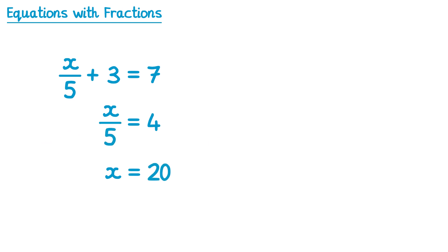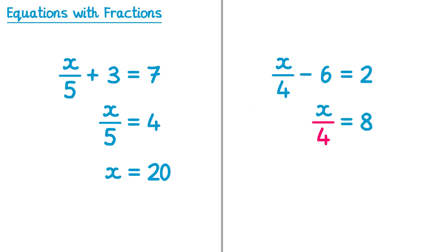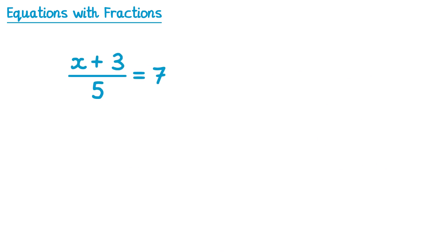On the right hand side, 4 multiplied by 5 is 20, so x equals 20. Let's try another similar one. In this equation it subtracts 6, so the inverse is adding 6 to both sides. The subtract 6 cancels on the left, leaving x over 4. On the right, 2 add 6 is 8. Then because we have divide by 4, we multiply by 4 on both sides. The 4s cancel on the left, and 8 multiplied by 4 is 32.